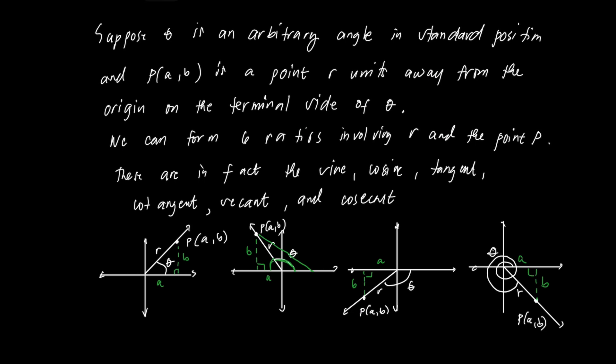This method of forming a right triangle by dropping a perpendicular line from point AB to the horizontal axis is called the reference angle. So theta in the first example is equivalent to the reference angle. In each of the other quadrants, the corresponding angle alpha is the reference angle. The concept of the reference angle is very important in finding the six trig functions, and we will discuss reference angles and reference triangles in detail later.